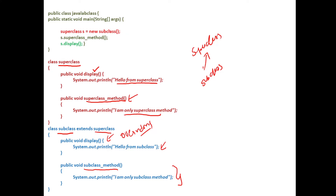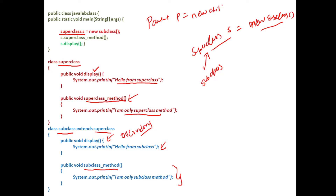Now what we are doing is using the reference of the superclass: superclass S equals new subclass. We are typecasting — an object of type subclass is being typecasted using a reference of superclass. You can do this: parent P equals new child. So it's like using the reference of the parent to create a child object. You are typecasting this child to a parent — this is called upcasting.